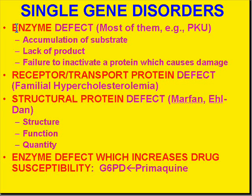In the classical single gene disorder, you have an abnormal DNA sequence producing an abnormal protein, enzyme, or polypeptide — so the enzyme doesn't work. Therefore you have not only a lack of the product from the enzyme, but significant accumulation of the substrate as well. There may also be a failure to inactivate a protein, which causes damage — which is what enzymes normally do.